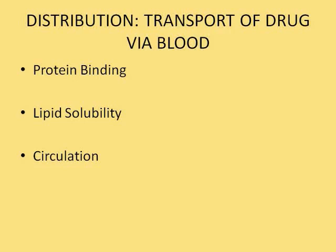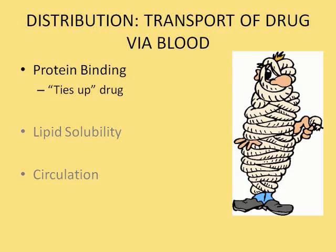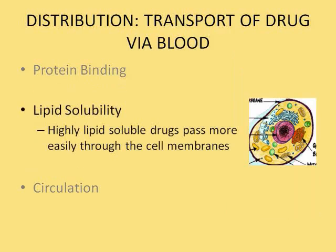Once the drug is in the bloodstream, it needs to be transported to the different parts of the body. Three things are going to affect that distribution: protein binding, lipid solubility, and circulation. If a drug is bound by protein, it's not available to treat the body — some drugs are very susceptible to this. The cell membrane has a high lipid concentration, so drugs that are highly lipid soluble can more easily cross into the cell.